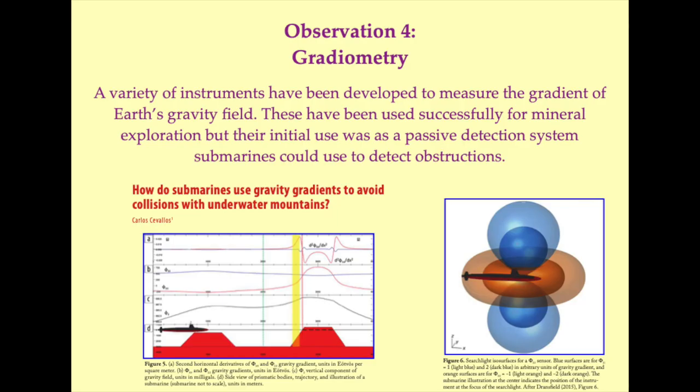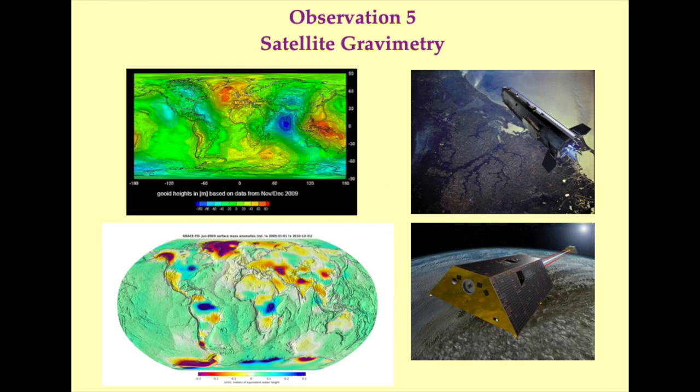Gravitational gradiometers use three pairs of widely separated accelerometers set orthogonally to one another. The difference in acceleration experienced by each pair of accelerometers allows the gradient of gravitational acceleration to be calculated for that spatial axis. Today, this technique is widely used in mineral exploration, but it was originally developed to allow submarines to passively detect underwater obstructions and avoid them. High-precision gradiometers were deployed on the European Space Agency's GOCE satellite mission to directly observe Earth's gravitational field, as shown here. Laser ranging measurements of inter-satellite distances in the GRACE and GRACE follow-on missions have been used to determine surface mass anomalies, as shown in the lower panels.